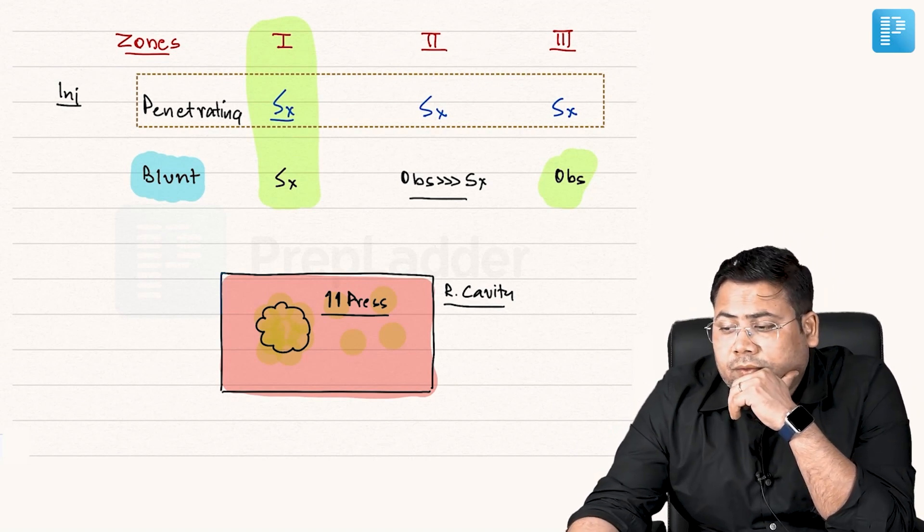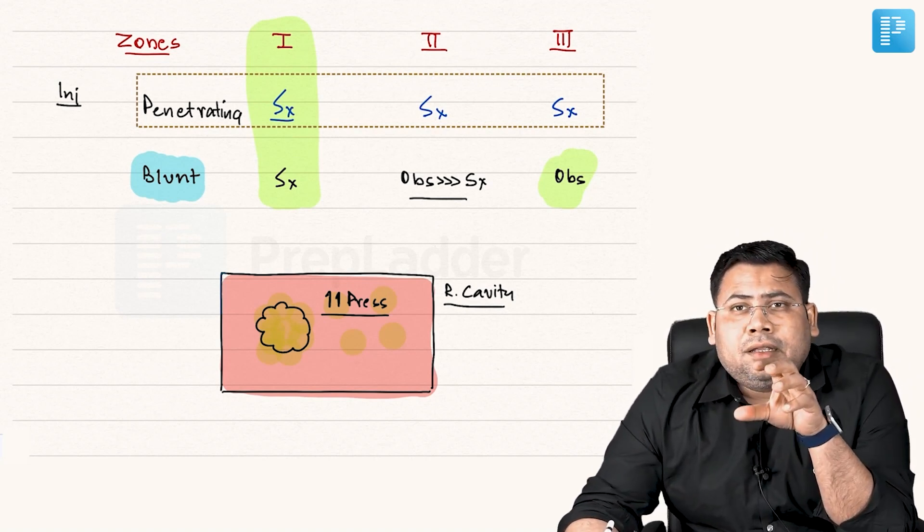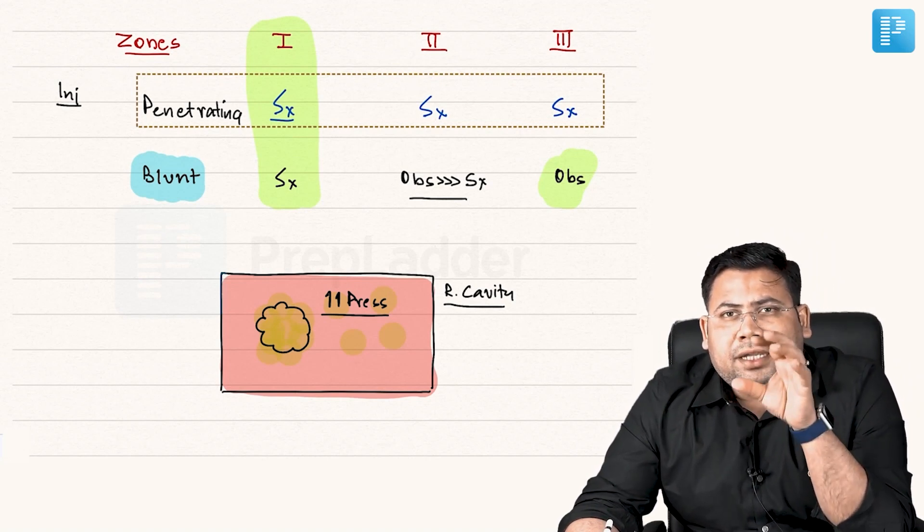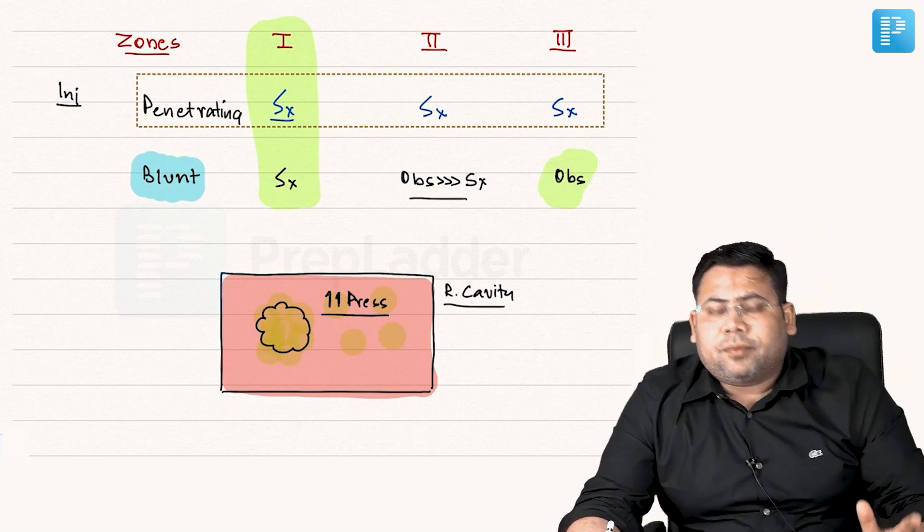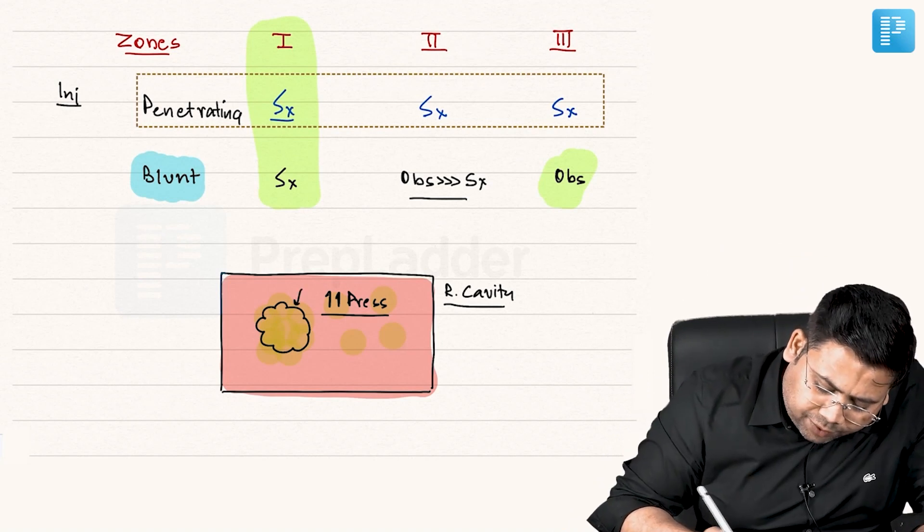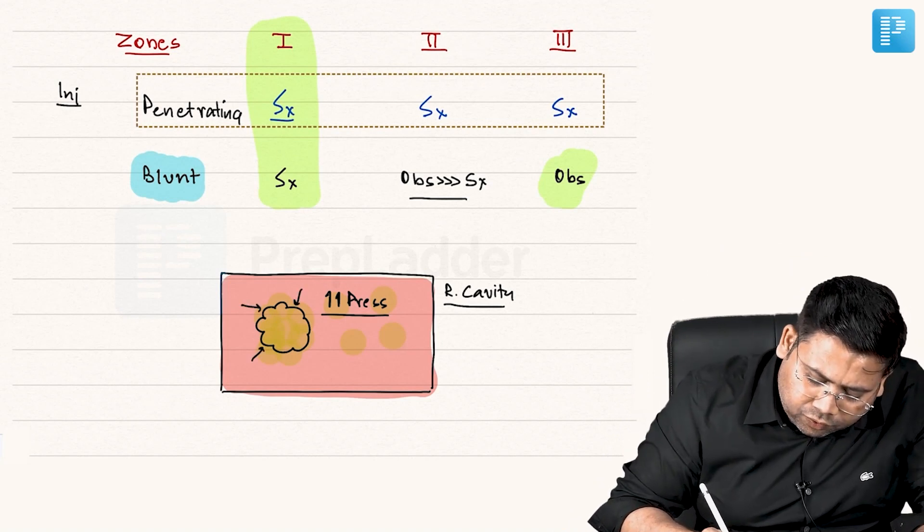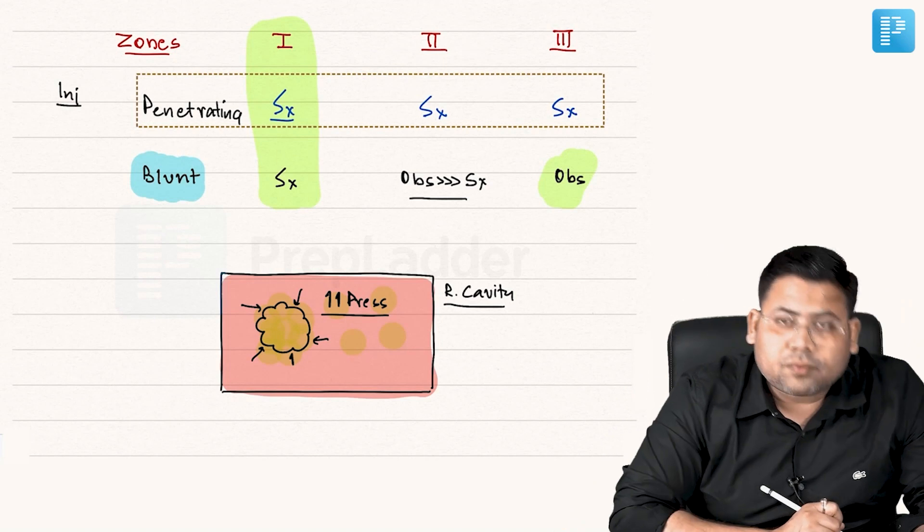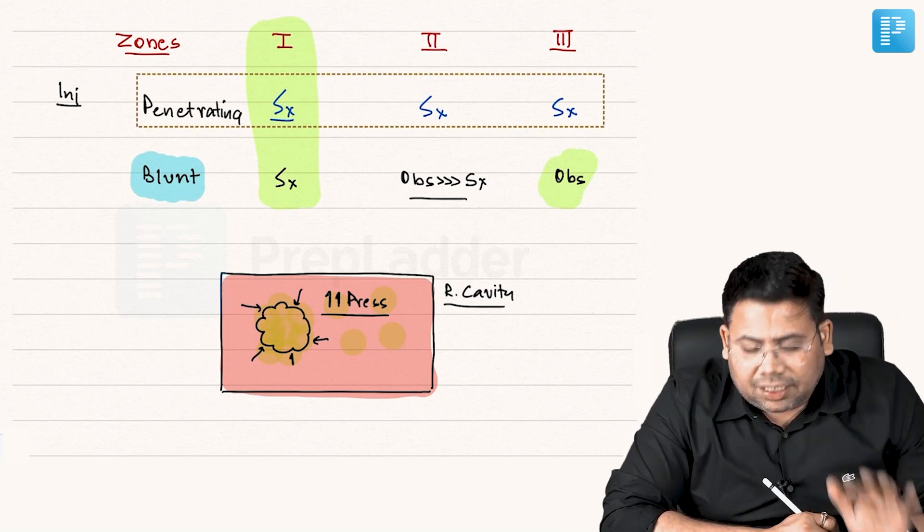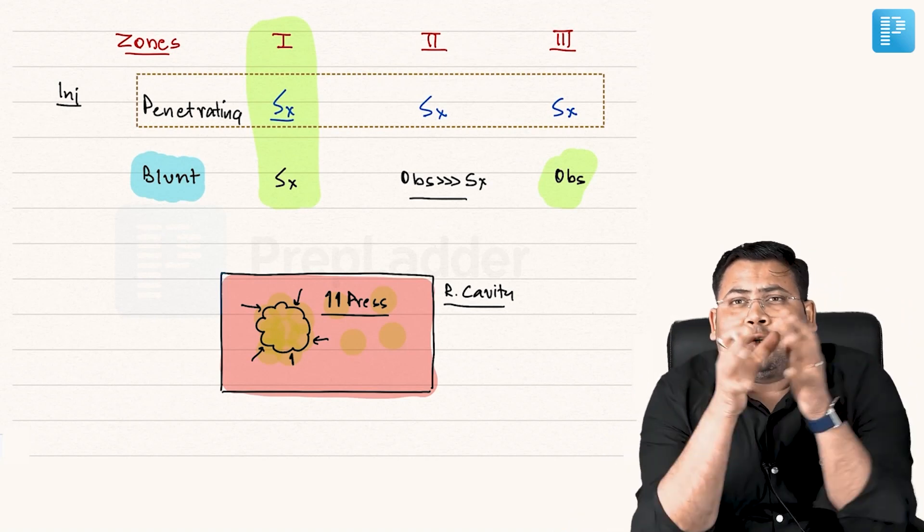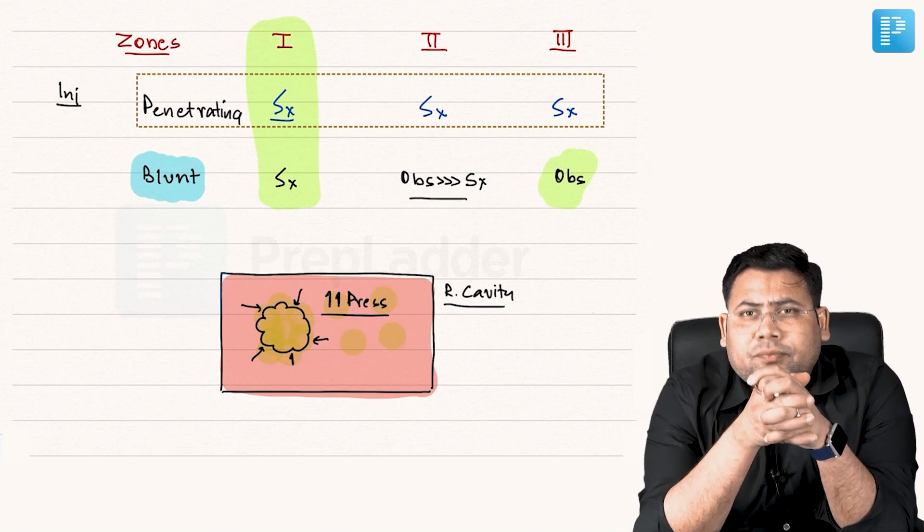This is retroperitoneal cavity. Because this cavity is completely full of blood, you must have studied this in physics. That is Pascal's law. The Pascal's law states that inside a closed container, the pressure P is equally applied everywhere. And therefore, this pressure P will be applied over this area also. Thus, this is going to act like a self-tamponade.